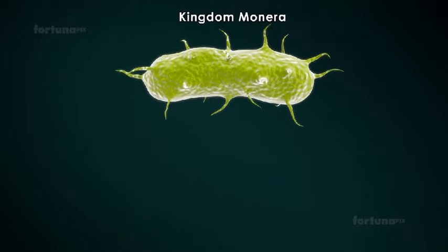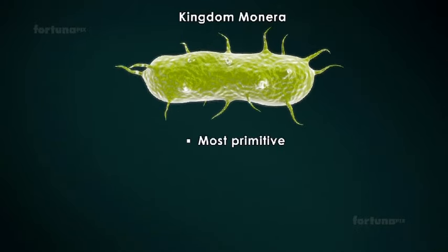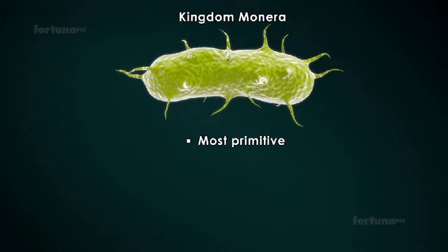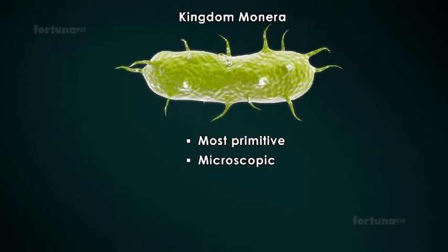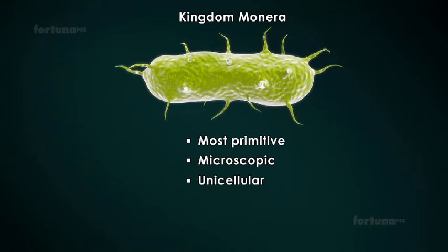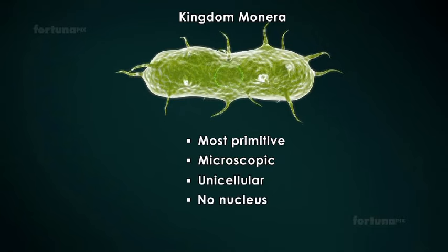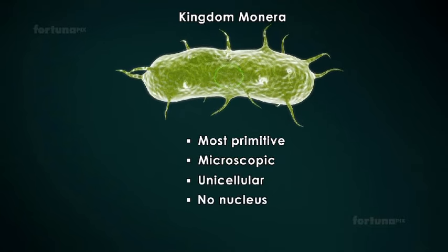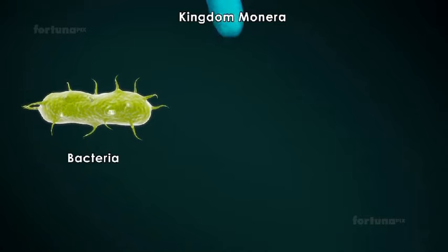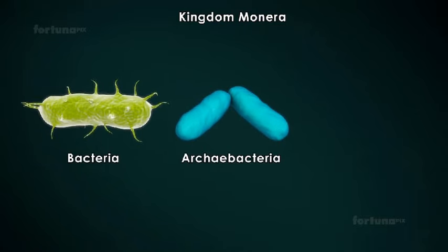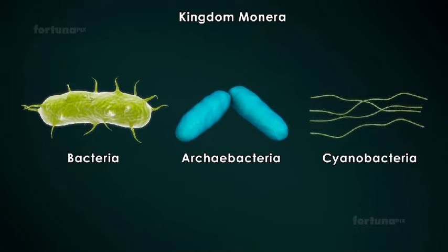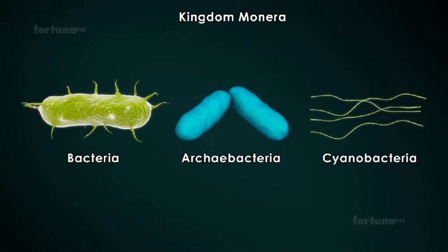Kingdom Monera consists of the most primitive lifeforms found on Earth. These organisms are usually microscopic and unicellular, meaning they are single-celled. They have no nucleus within their cytoplasm. Bacteria, Archaebacteria, and Cyanobacteria are all members of Kingdom Monera.